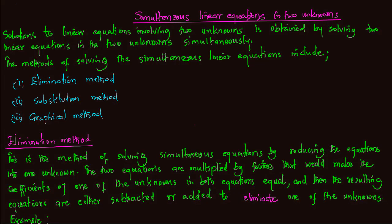Simultaneous linear equations in two unknowns. Solutions to linear equations involving two unknowns are obtained by solving two linear equations simultaneously — that is, at the same time. The methods of solving simultaneous linear equations include: 1. Elimination method, 2. Substitution method, 3. Graphical method, which we shall look at later on, and 4. Matrix method, which we shall also look at later on.